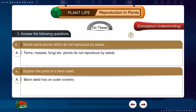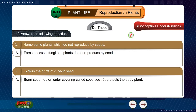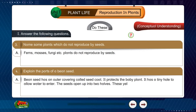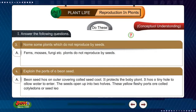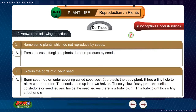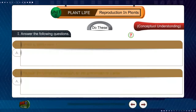Question 4: Explain the parts of a bean seed. Answer: A bean seed has an outer covering called a seed coat. It protects the baby plant and has a tiny hole to allow water to enter. The seed opens up into two halves; these yellow fleshy parts are called cotyledons or seed leaves.